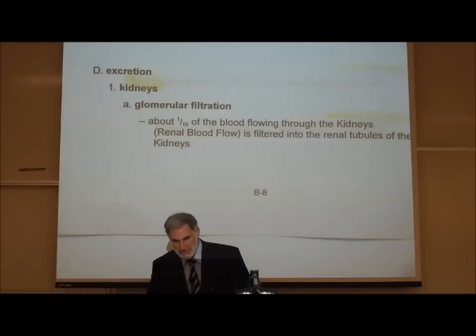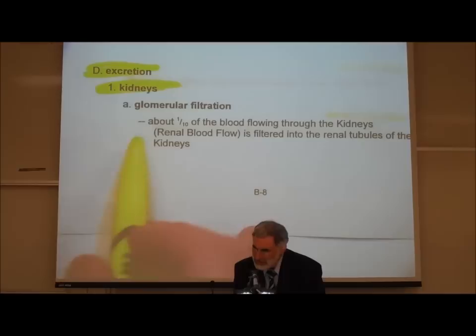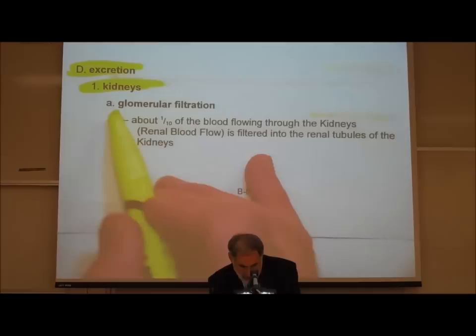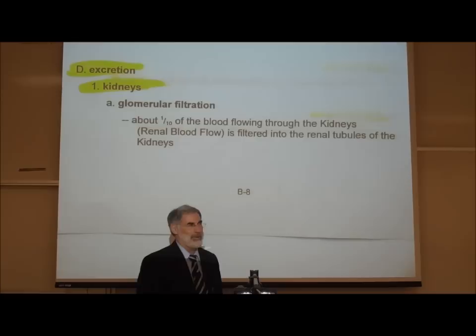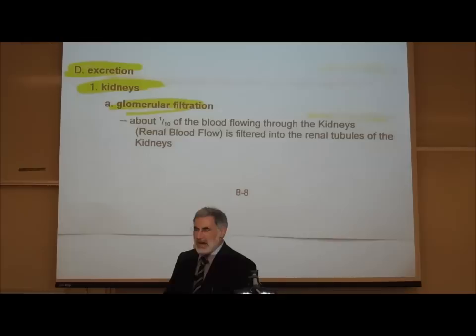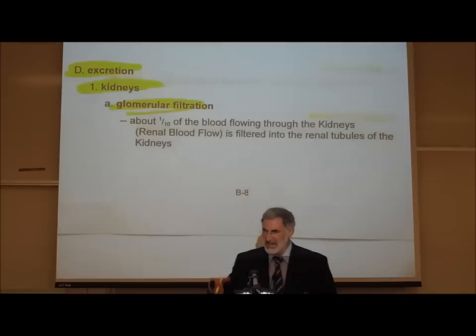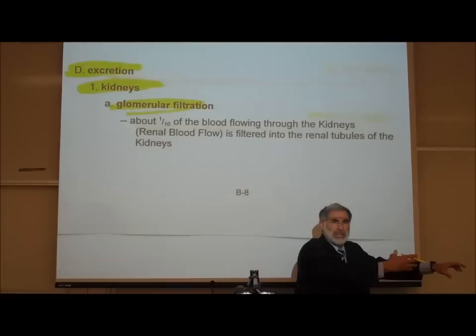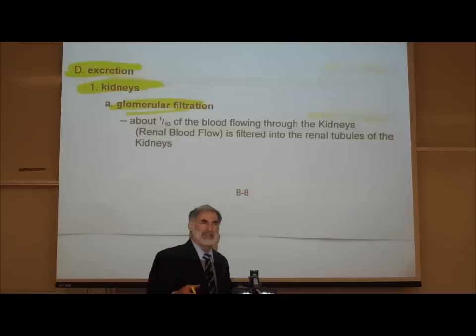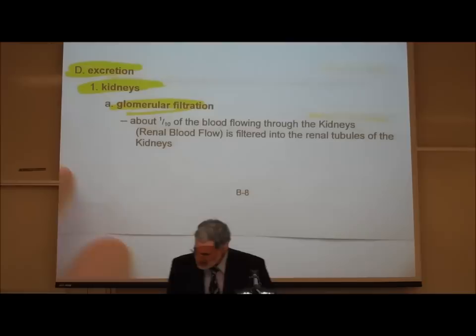Let's talk about excretion. The major organ that excretes drugs is the kidneys. They're not the only way drugs are eliminated from the body, but they are the main way. The kidneys filter our blood — the process is technically called glomerular filtration. Normally about one-tenth of the blood flowing through your kidneys is filtered by the million nephrons or renal tubules inside each kidney. Not all 100% of the blood is filtered on each single pass — usually only about 10% — and the other 90% must be picked up on the next pass.